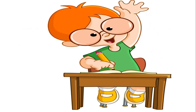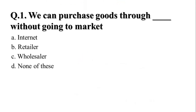Now I will ask some questions based on today's topic. Your first question is: we can purchase goods through dash without going to market. Options are: A. Internet, B. Retailer, C. Wholesaler, D. None of these. And your right answer is option A, Internet.